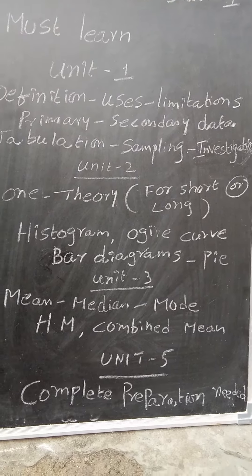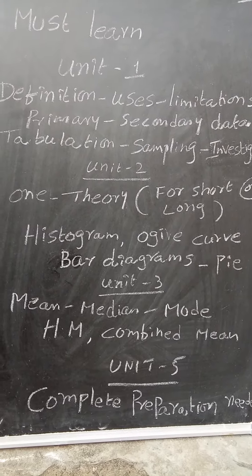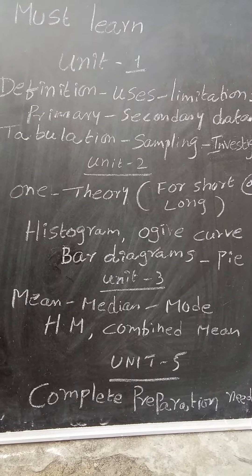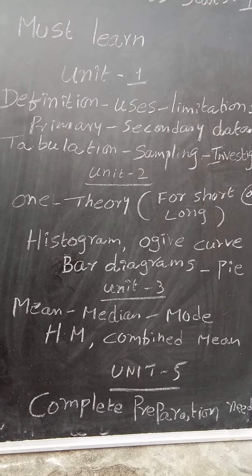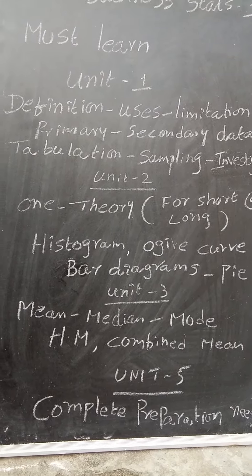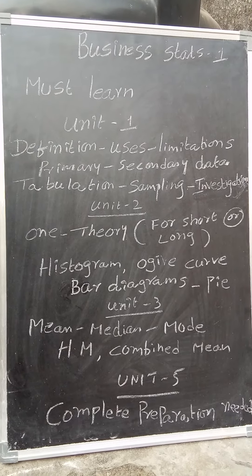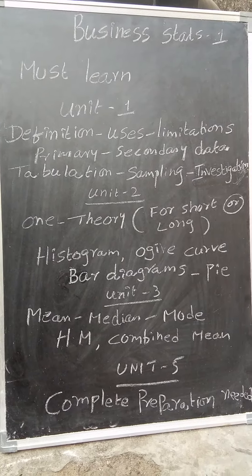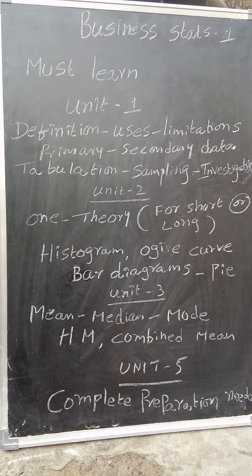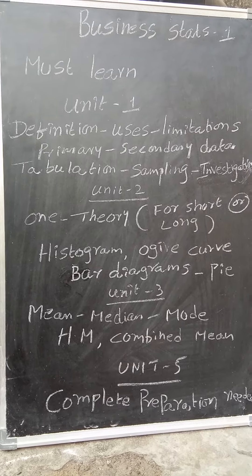You must learn completely, definition you should learn, what is the meaning of correlation. Then there are two methods of correlation, like rank correlation and Karl Pearson correlation, from actual mean, from assumed mean. And in case of rank correlation, when ranks are equal and when ranks are not equal, you must concentrate on unit number 5.